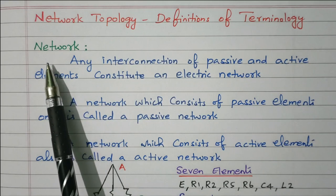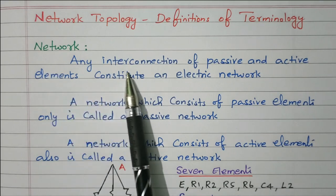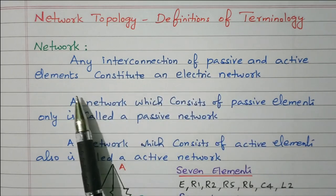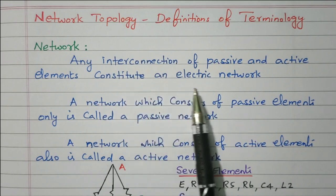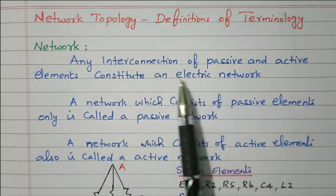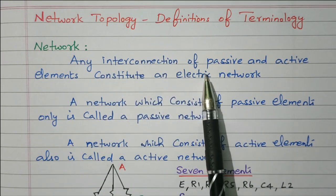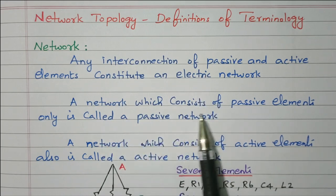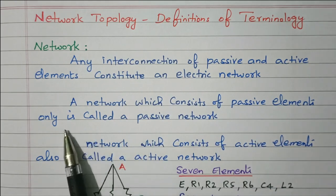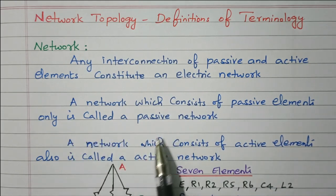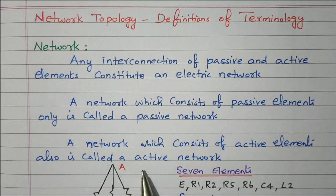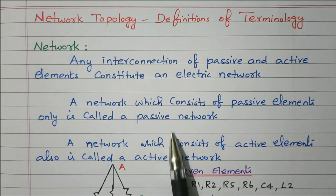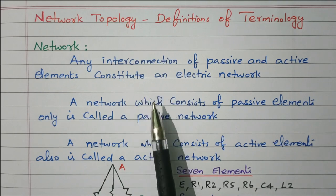First we will see what is meant by a network. Any interconnection of passive and active elements constitutes an electric network. A network which consists of passive elements only is called a passive network. A network which consists of active elements also is called an active network. So the collection of interconnected elements is a network.